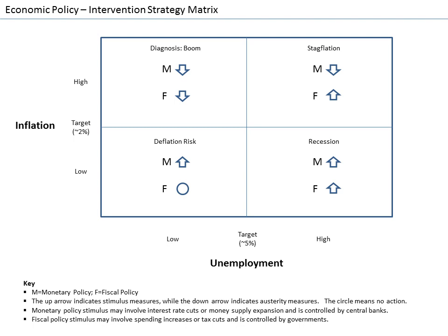The IS-LM model represents all the combinations of interest rates and output that ensure equilibrium in the goods and money markets. The goods market is represented by the equilibrium in investment and saving, and the money market is represented by the equilibrium between the money supply and liquidity preference. The IS curve consists of the points where investment, given the interest rate, is equal to savings, given output. The IS curve is downward sloping because output and interest rate have an inverse relationship in the goods market. As output increases, more money is saved, which means interest rates must be lower to spur enough investment to match savings.